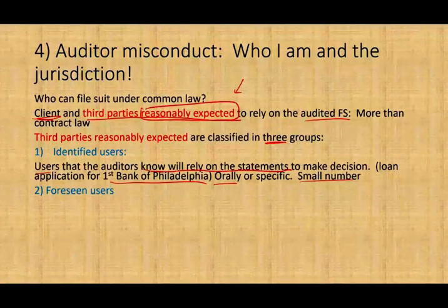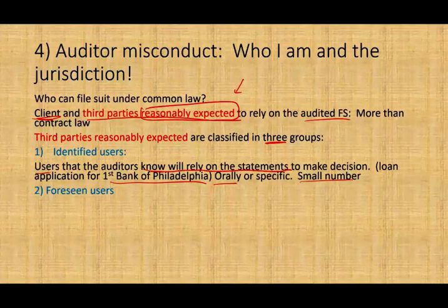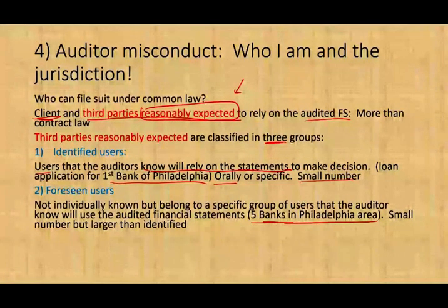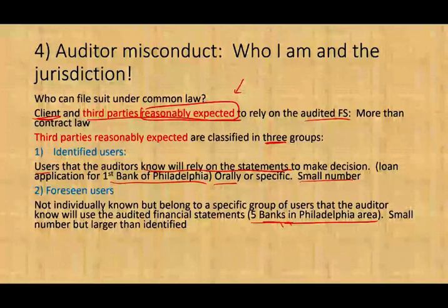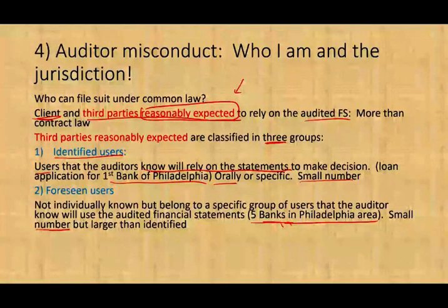The second group is called foreseen users. These are not individually named, but a group is identified. For example, the client says they'll take the financial statements to the five banks in the Philadelphia area. Any bank in the Philadelphia area becomes a foreseen user. This group is larger than identified users because you haven't named which specific banks, but you've identified the class.